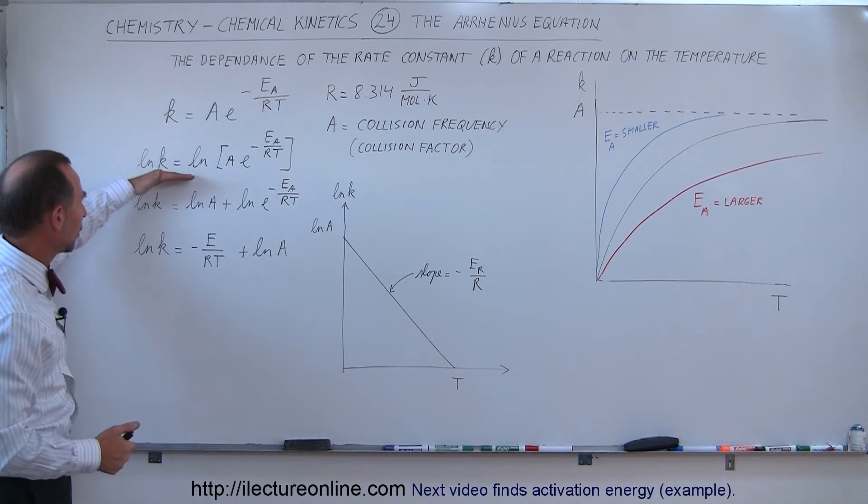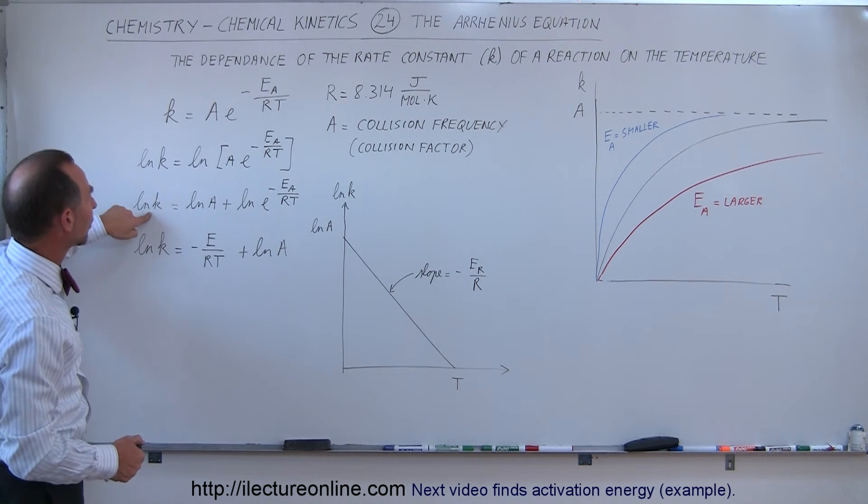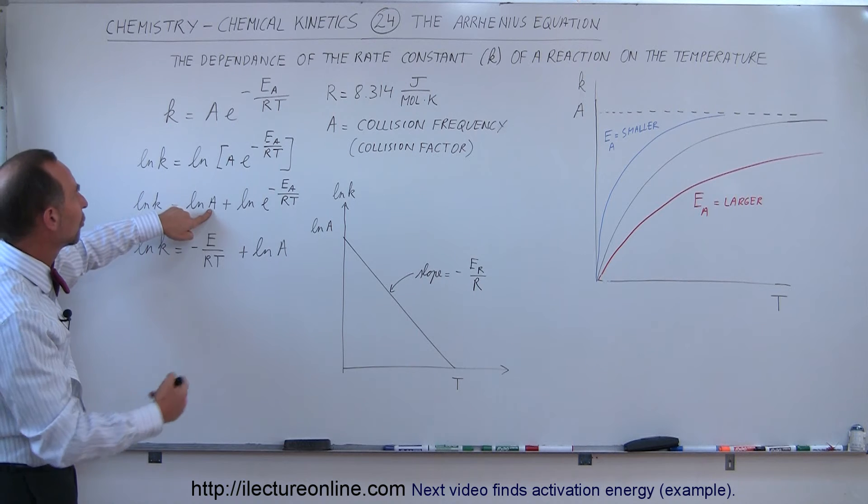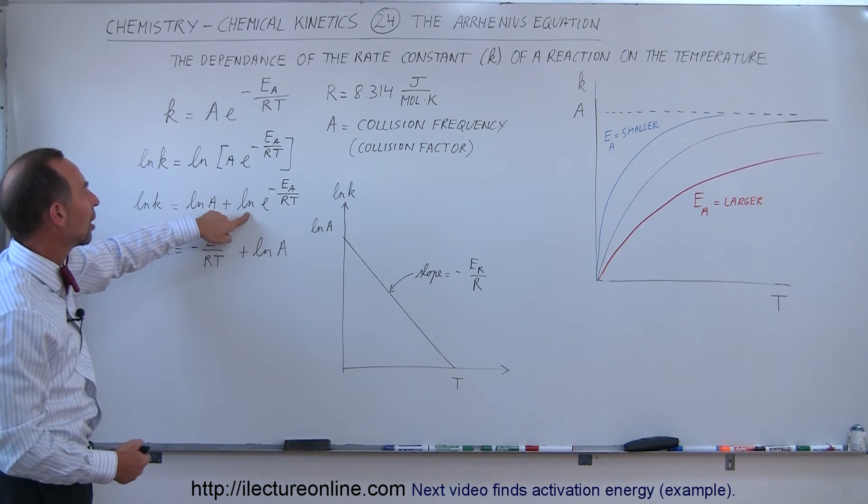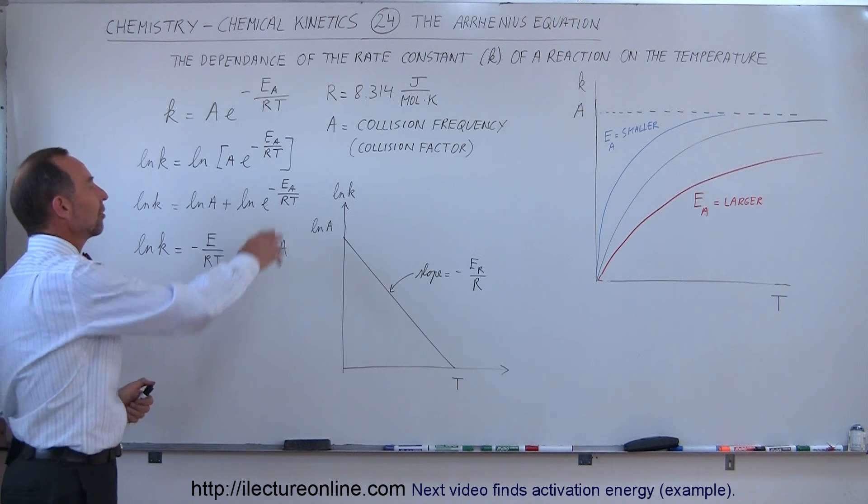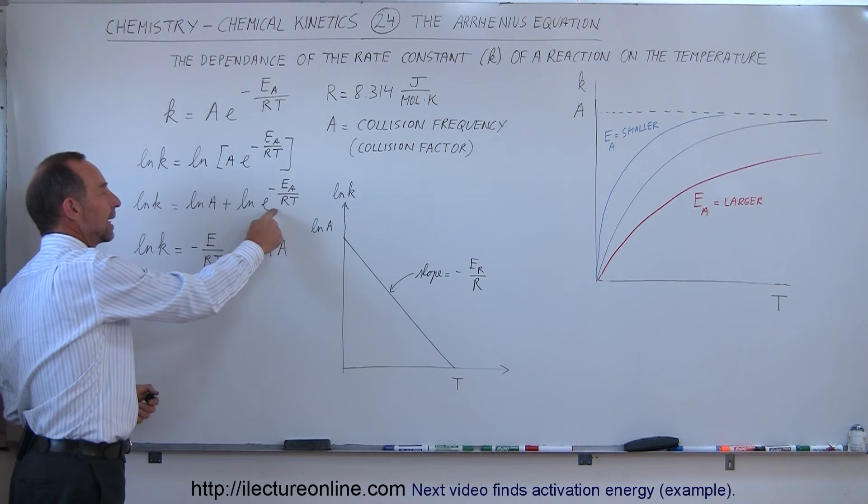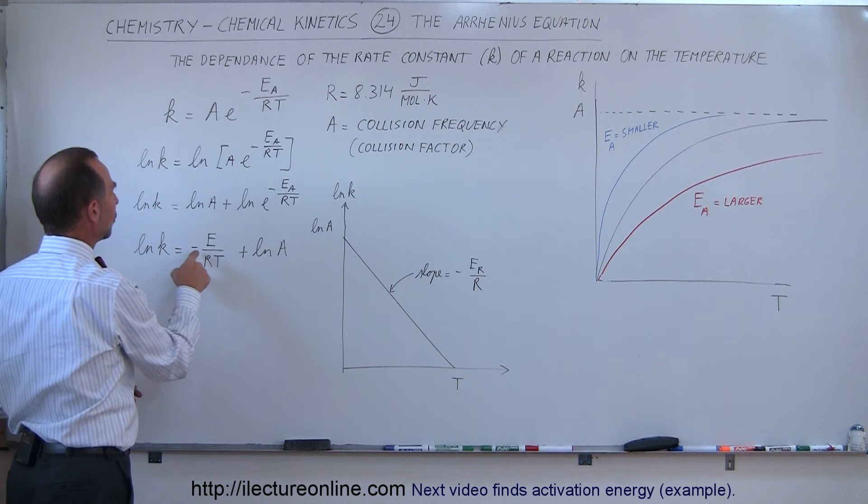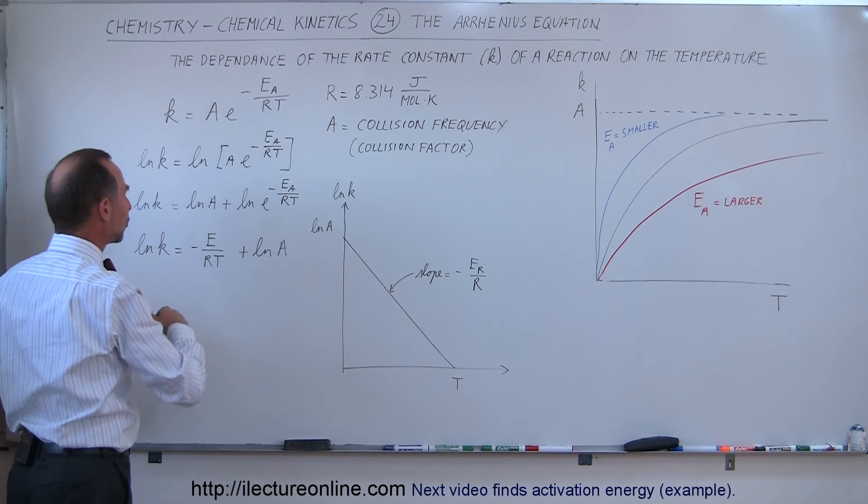Now if you do want to take the natural log of both sides, you have the natural log of the rate constant is equal to the natural log of the collision frequency, plus the natural log of e to the minus activation energy divided by RT. Of course the natural log negates the exponential, so you end up with the natural log of k is equal to minus Ea over R times 1 over T.